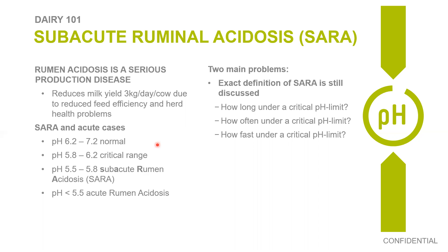Regarding rumen acidosis: if the pH value is too low because feeding is wrong, the cow can go into acidosis, which is a serious production disease. It reduces milk yield, and the cause is most often reduced feed efficiency. Controlling the pH value is actually a win-win situation for both the farmer and the cow.